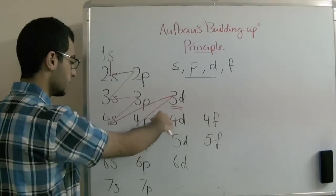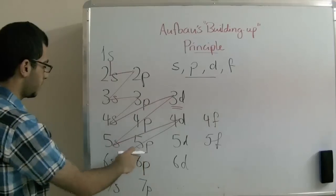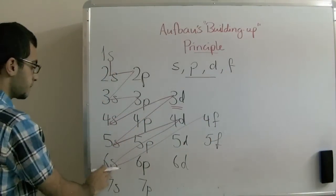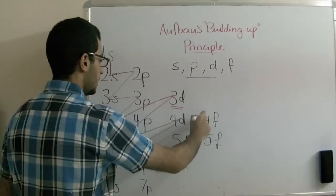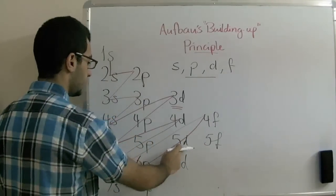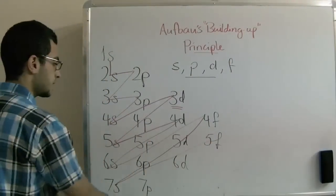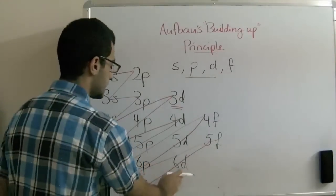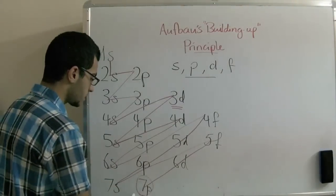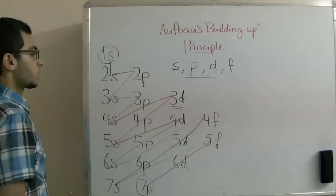The 5s is less than the 4d. Then the 4d is less than the 5p. The 5p is less than the 6s. The 6s is less than the 4f. The 4f is less than the 5d. The 5d is less than the 6p. The 6p is less than the 7s. And finally, the 7s is less than the 5f. Then we go downwards. The 5f is less than the 6d, less than the 7p. So the highest energy sublevel in the energy content is the 7p, and the least is the 1s.